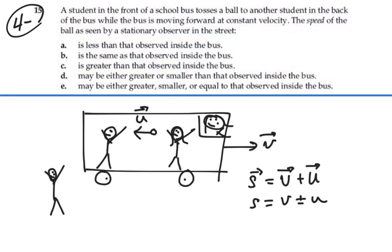Then the speed of the outside observer for the ball will be addition of those two velocities, or speeds. And if the ball is going in the opposite direction of the bus, then it will be subtracting the velocity of the ball from the velocity of the bus.